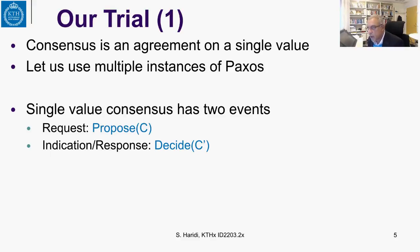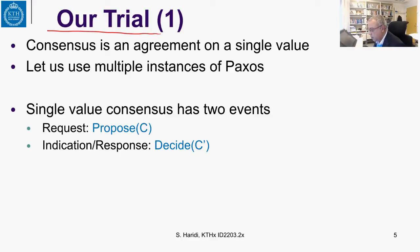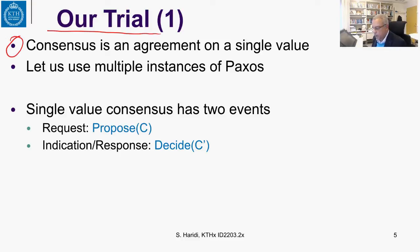We will now try to implement a replicated state machine. As we know from our course, consensus is an agreement on a single value. One way to implement a replicated state machine, or in particular a replicated log, is to use multiple instances of Paxos.